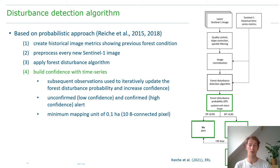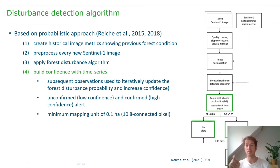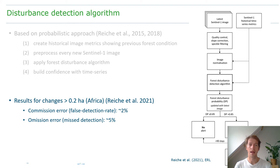We apply a minimum mapping unit of 0.1 hectare, implemented by requiring a threshold of 10 connected pixels — meaning even 10 pixels connected in a line qualifies. Results for Africa for alerts larger than 0.2 hectare show a commission error of 2% and an omission error of 5%, both of which are very low.